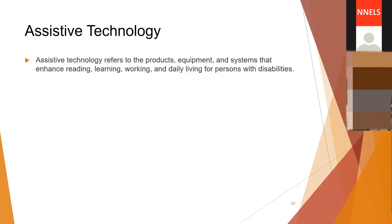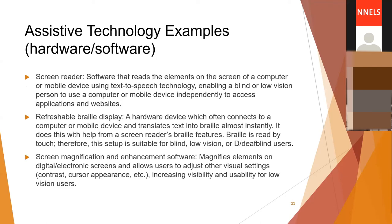Part of this equation of access is assistive technology. Assistive technology refers to the products, equipment, and systems that enhance reading, learning, working, and daily living for persons with disabilities. Screen readers, for example, are software that reads the elements on screen of a computer or mobile device using text-to-speech technology, enabling a blind or low-vision person to use a computer or mobile device independently to access applications and websites.